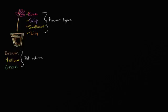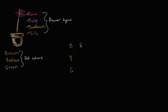So let's think through it. I'll just write the first letters to visualize, so I don't have to write down everything. So you could have a brown pot, you could have a yellow pot, or you could have a green pot. You definitely have to pick a pot, so you're going to have one of those. And then for each of these three, there's four possible flowers you could have. You could have a rose with the brown pot, a rose with the yellow pot, a rose with the green pot.